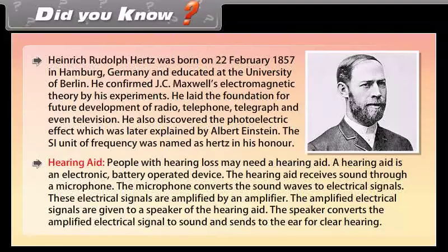Hearing aid. People with hearing loss may need a hearing aid. A hearing aid is an electronic, battery operated device. The hearing aid receives sound through a microphone. The microphone converts the sound waves to electrical signals. These signals are amplified by an amplifier. The amplified electrical signals are given to a speaker of the hearing aid. The speaker converts the amplified electrical signal to sound and sends to the ear for hearing.